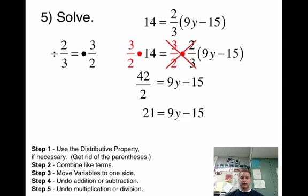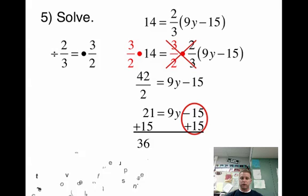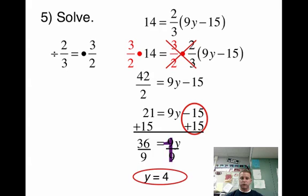Now I can go on to step 4. Add 15 to both sides. And those zero out. And we get 36 is equal to 9y. Divide both sides by 9. And we get our big fat 1 there. And we get y is equal to 4.